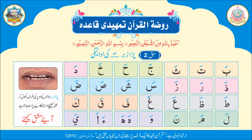طا زبر — طا۔ ظا زبر — ظا۔ عین زبر — عا۔ غین زبر — غا۔ طا، ظا، عا۔ غا۔ فا زبر — فا۔ قاف زبر — قا۔ کاف زبر — کا۔ فا، قا، کا۔ لام زبر — لا۔ میم زبر — ما۔ نون زبر — نا۔